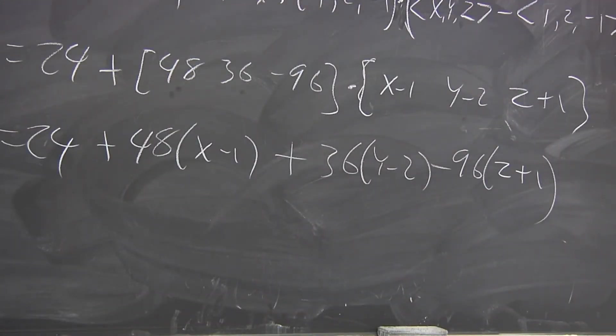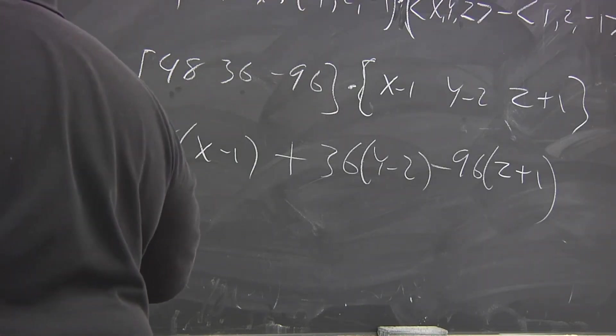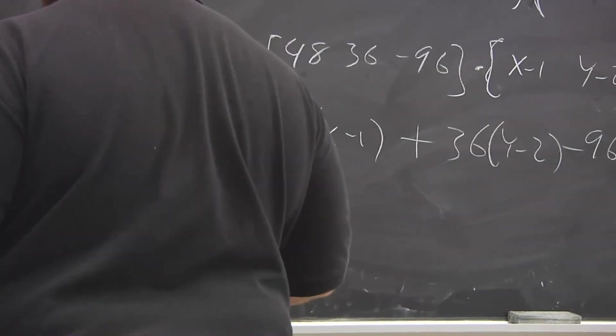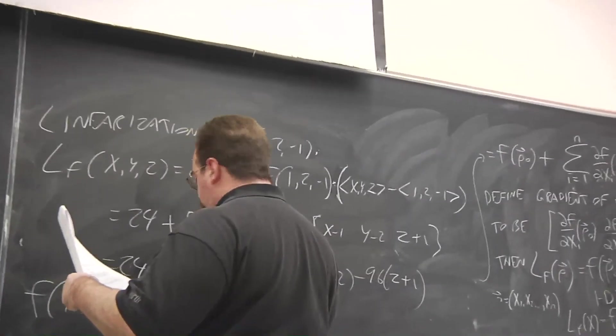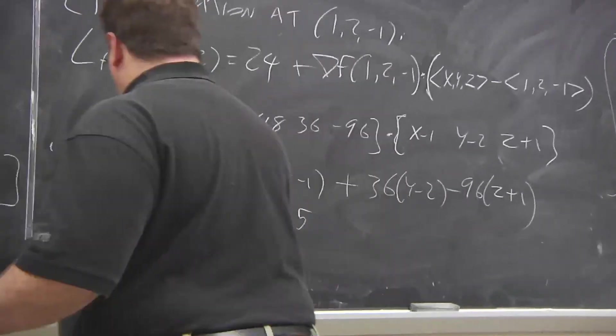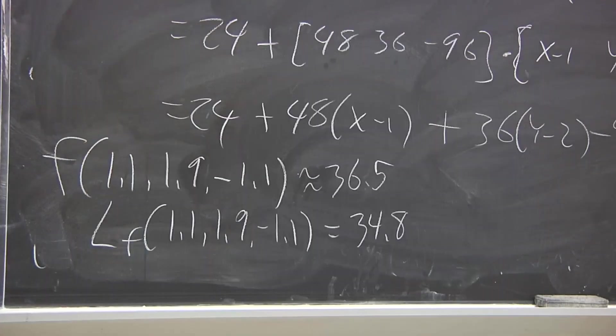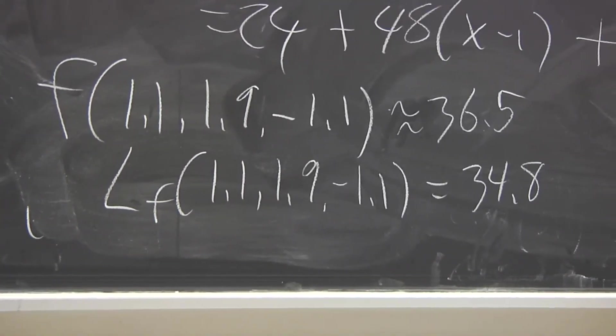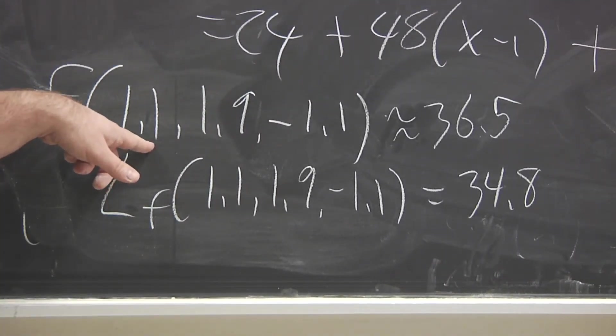Now let's use this linearization. Let's take a look at the value function at that 1.1, 1.9, -1.1. So we're just going off by 0.1 either way from this point. The actual function value is roughly 36.5. But the linearization at that same point turns out to be 34.8. So kind of far off, certainly more so than the previous example, the very first thing we did.